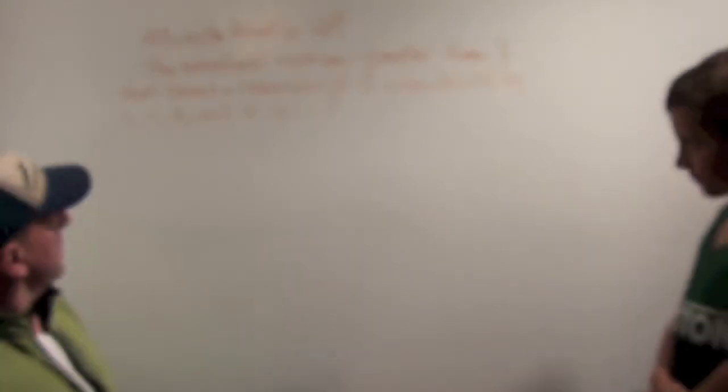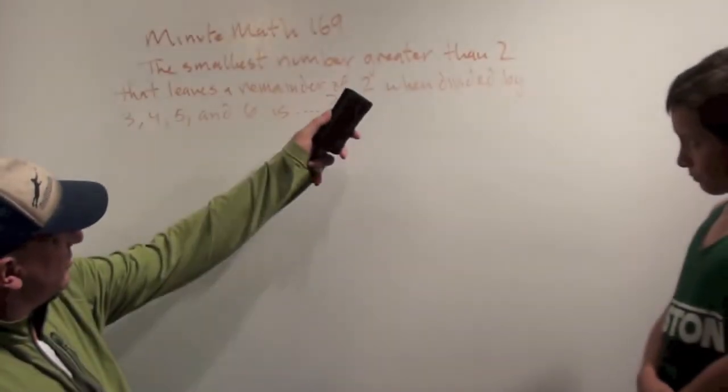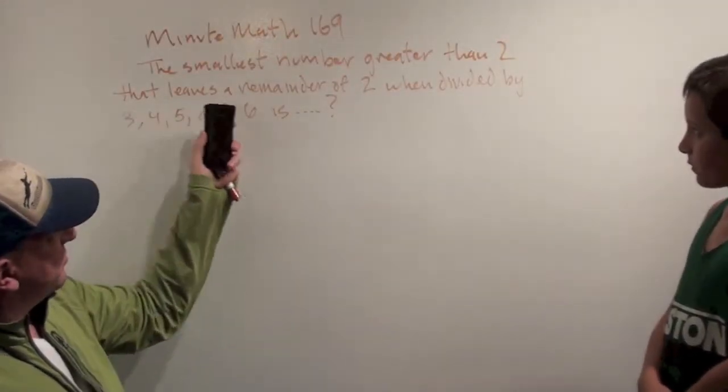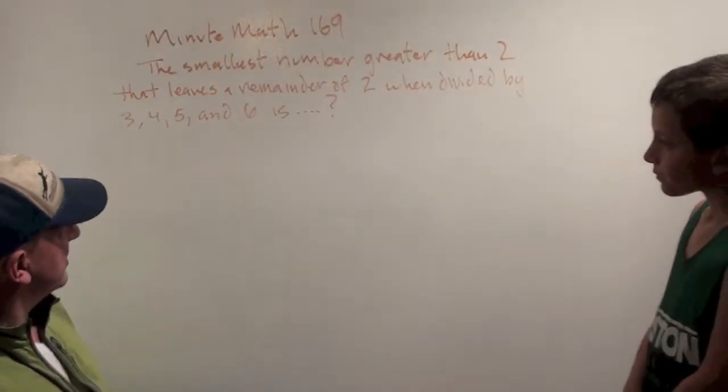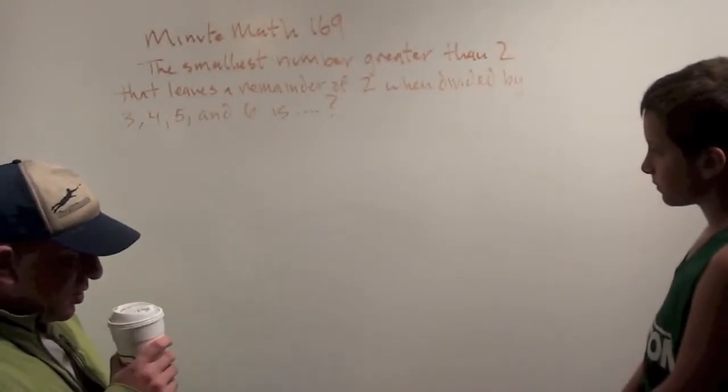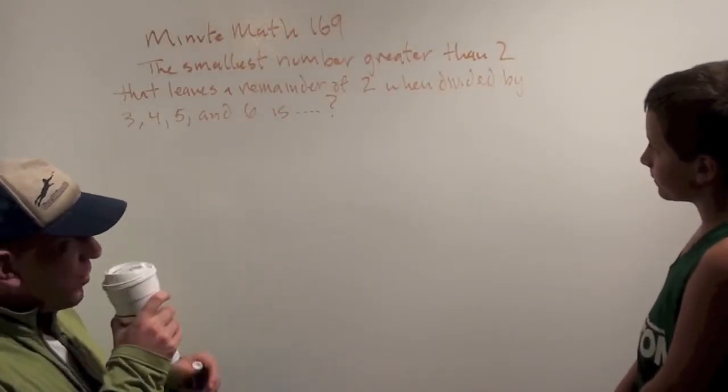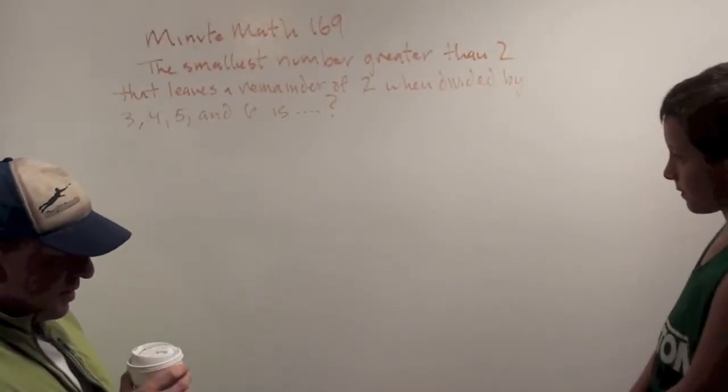So, here we go. The smallest number greater than 2 that leaves a remainder of 2 when divided by 3, 4, 5, and 6 is what number? Do you understand the problem? Yes. Okay, good.